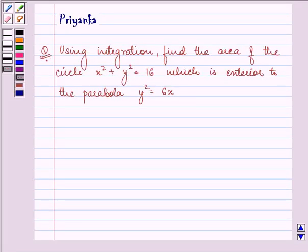Hello friends, how are you all doing today? The question says using integration find the area of the circle x² + y² = 16 which is exterior to the parabola y² = 6x.